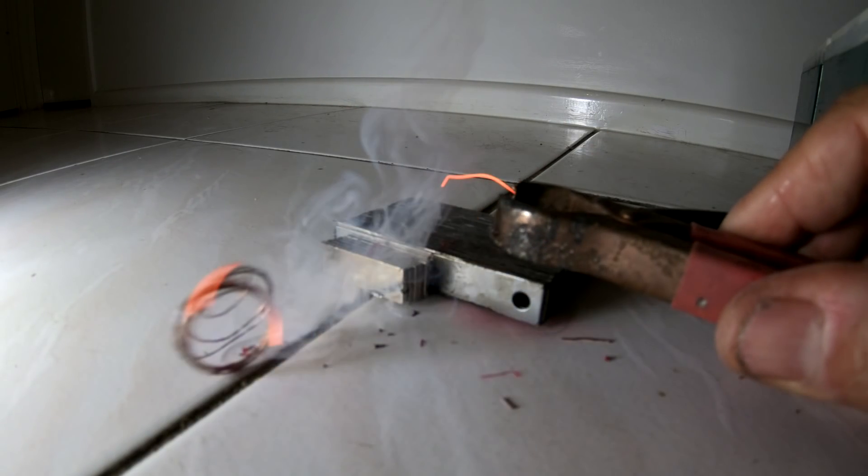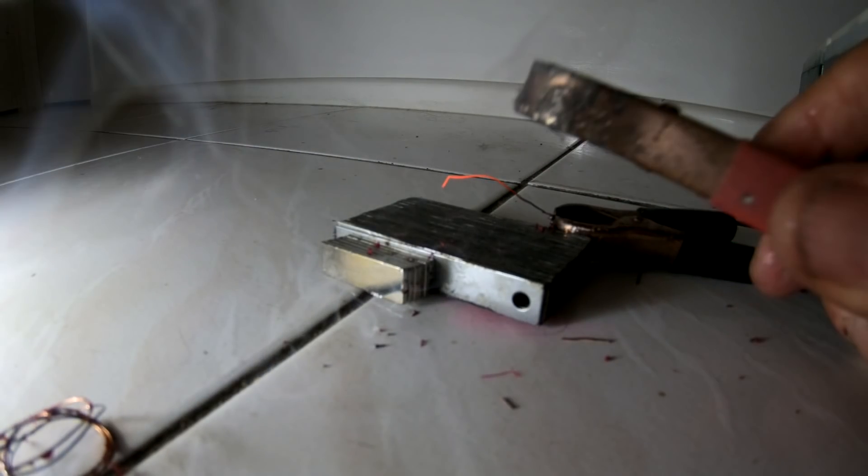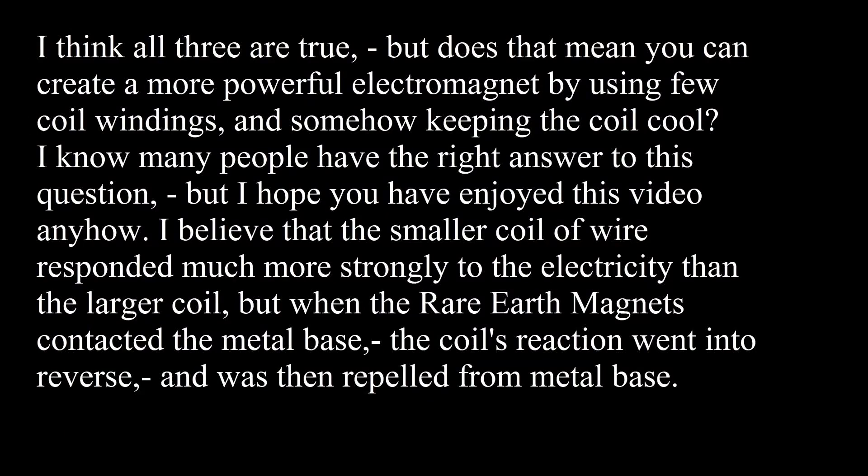So in conclusion, I believe it's not the voltage or the amount of coil that makes a super magnet—it's the amps. You just got to find a way of stopping the coil from overheating or even melting, for that matter.